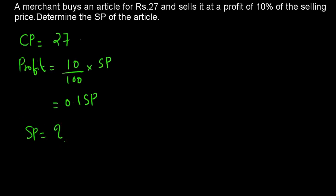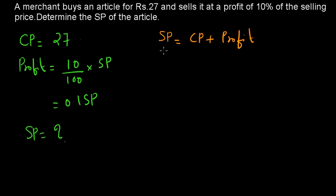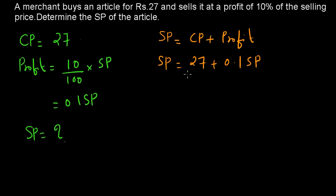This is a peculiar and interesting kind of question. We have the profit and we have the cost price. We know the relationship: selling price equals cost price plus profit. Substituting in this formula, SP equals 27 plus 0.1 SP. So SP minus 0.1 SP equals 27, which means 0.9 SP equals 27.